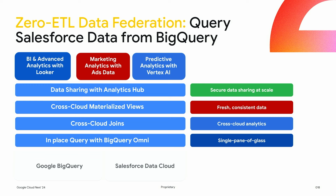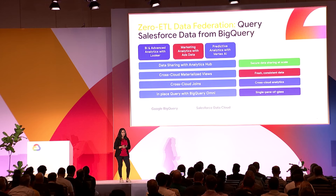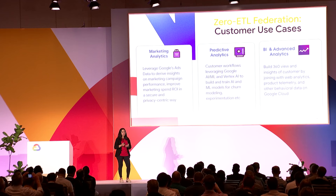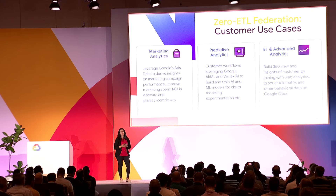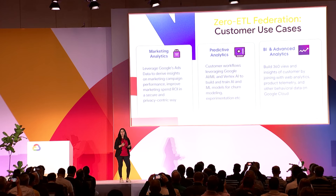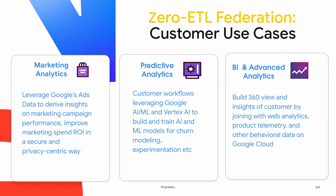With BigQuery Omni, you're able to query the Salesforce Data Cloud data in place without moving it. For ad hoc analysis, you can join data. To bring data over to BigQuery periodically, you can use cross-cloud materialized views. To share this data with your organization, you can use Analytics Hub for authorized users. This unlocks several use cases: Marketing Analytics — enriching Salesforce Data Cloud data for marketing campaigns and spend optimization using Google Ads data; Predictive Analytics with Vertex AI for modeling and experimentation; and BI and advanced analytics once the data is unified.